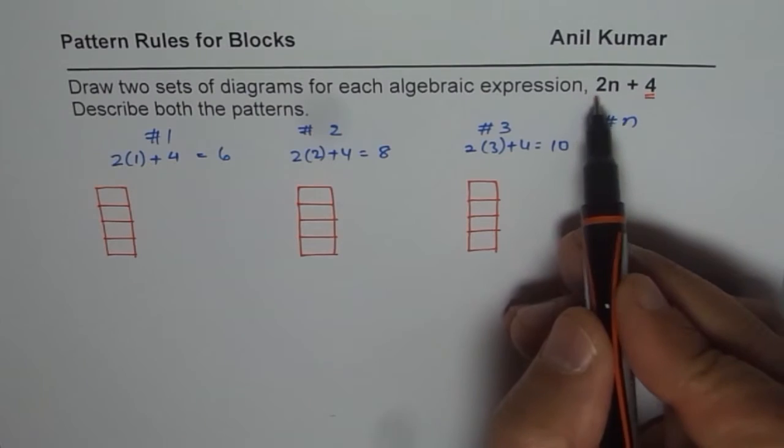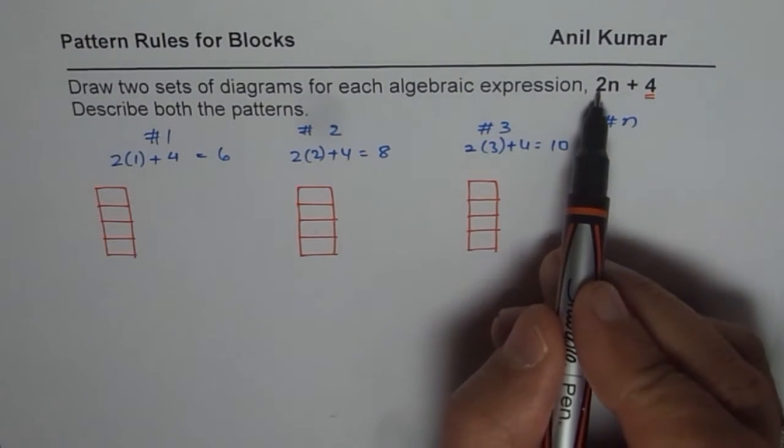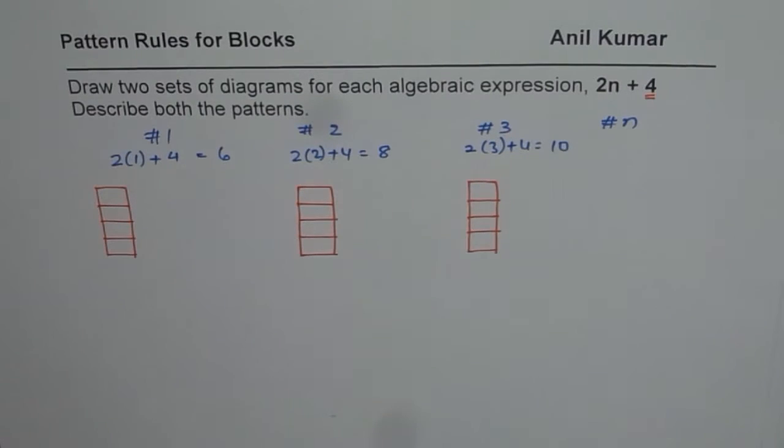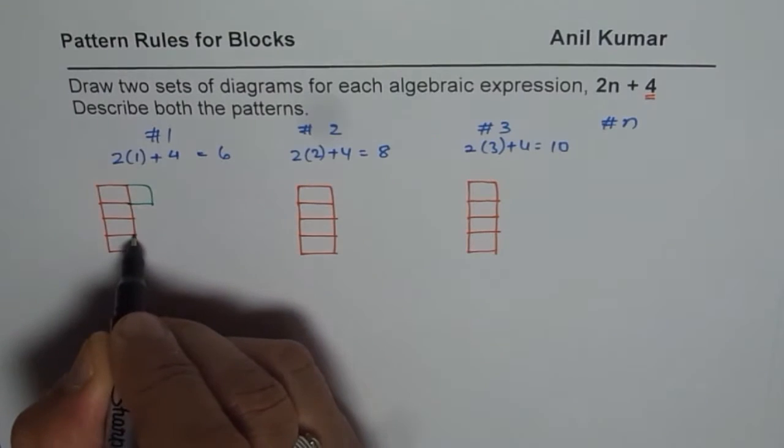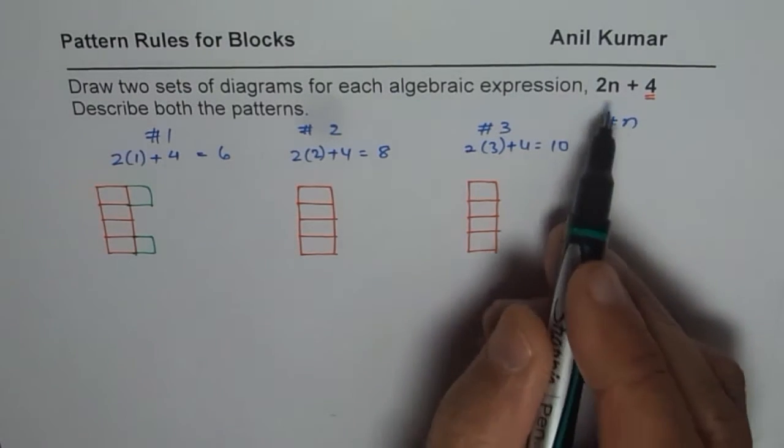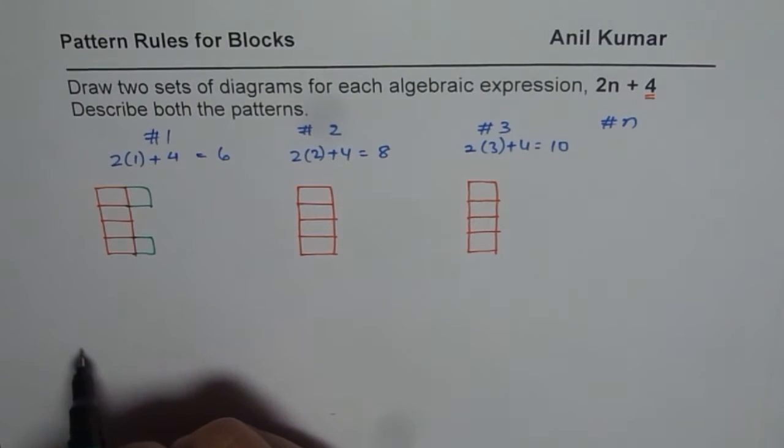Now for 2n: in the first figure, we need two more blocks. I can add one here and one here. That gives me two blocks, so there are six blocks total in the first figure.